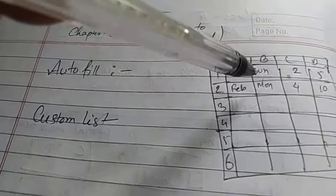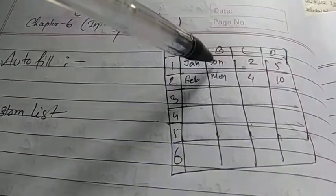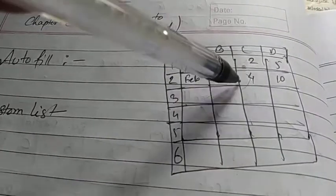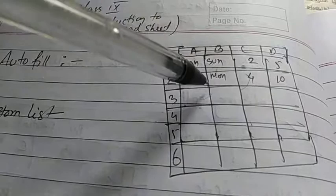Similarly, suppose you have to type Sunday, Monday, Tuesday in a row or column. Just type Sunday and Monday, select the two cells, bring the mouse cursor here. When it changes to a plus sign, with clicking, drag the mouse downwards. Automatically, the remaining days - Tuesday, Wednesday, Thursday - will appear. This is autofill.